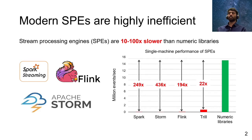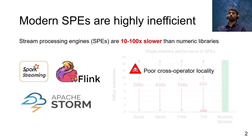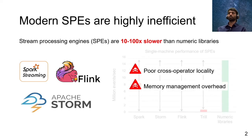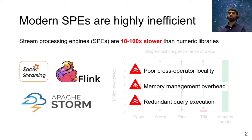There are three key reasons for this inefficiency. First, modern stream processing engines fail to properly preserve cross-operator locality. They also suffer significantly from runtime memory management overhead. And finally, most stream processing engines follow an eager query execution pattern, and this causes a considerable amount of redundant computations during query execution.